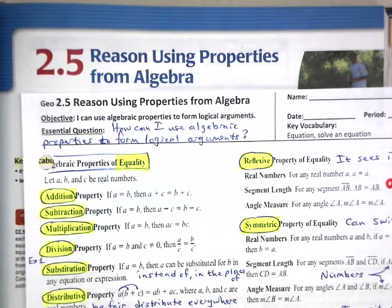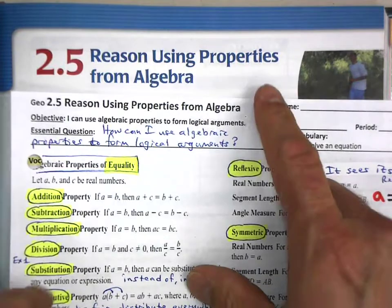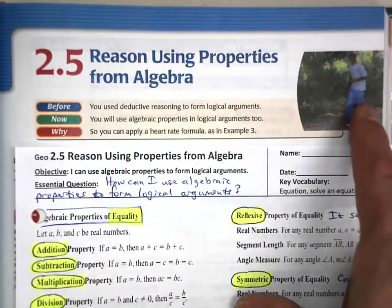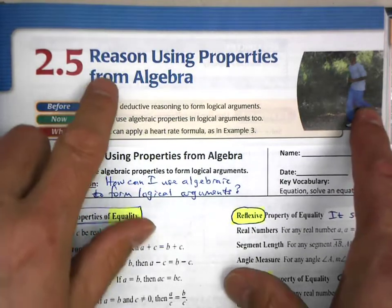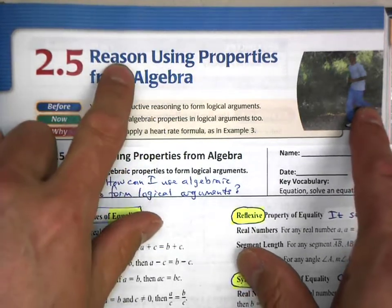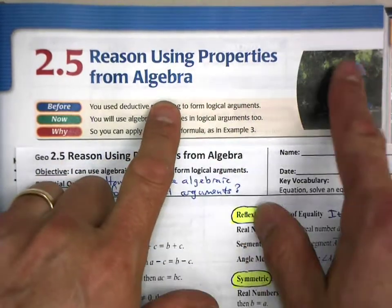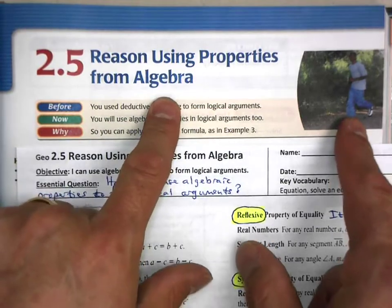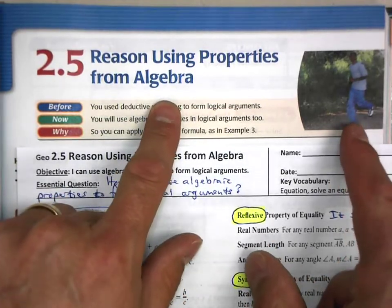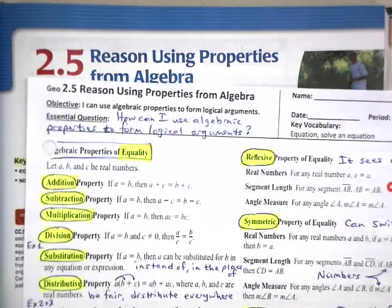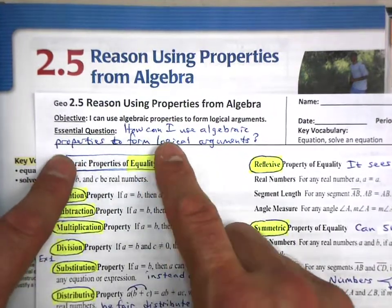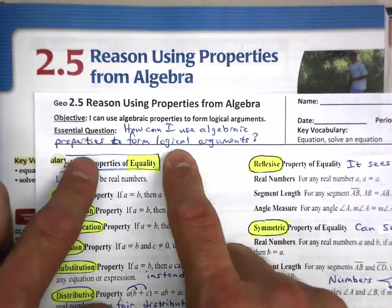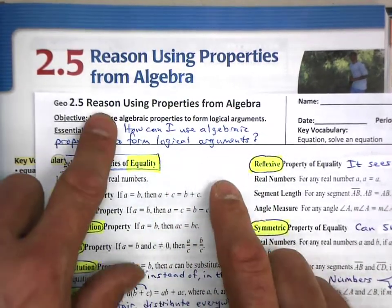Welcome to 2.5, Reason Using Properties from Algebra. Maybe it means that when you hear about reasoning and using properties from algebra, you want to run away. But hopefully after we go through this, you'll see how it really is useful to you. So our essential question is, how can I use algebraic properties to form logical arguments? We want to reason here.